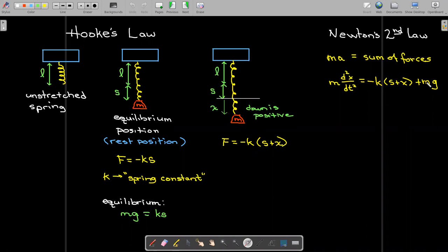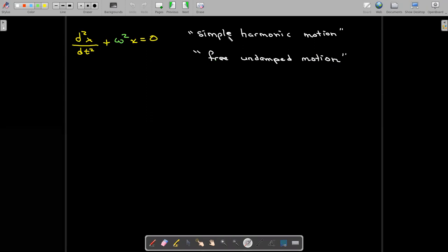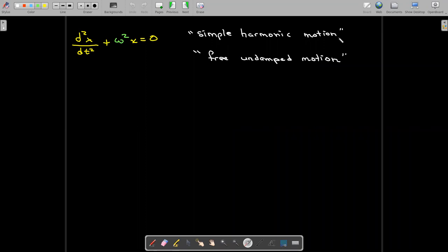Now, if I remove the parentheses, I'm going to have a negative ks. And I know that a negative ks plus mg, so ks is the same as mg. We discovered that from the rest position. So I'm left with negative k times x. So divide through by m. And then for convenience, we're going to just rename the k over m as omega squared. So this differential equation here describes what is known as free undamped motion or simple harmonic motion.